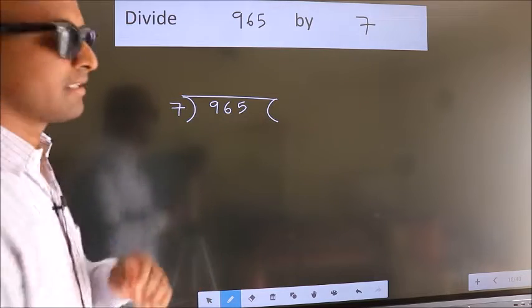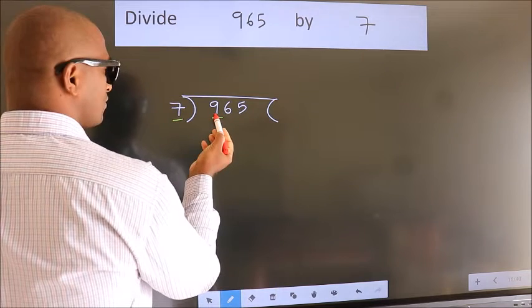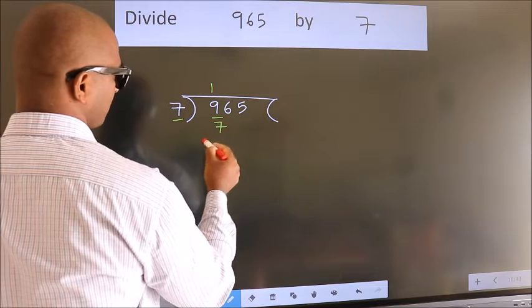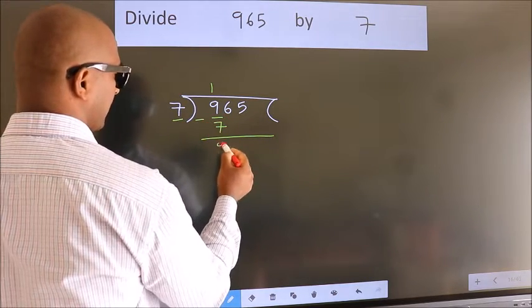Next. Here we have 9, here 7. A number close to 9 in 7 table is 7 once 7. Now we should subtract. We get 2.